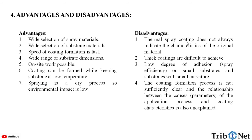In case of disadvantages, thermal spray coating does not always indicate the characteristics of the original material. Thick coatings are difficult to achieve. There is a low degree of adhesion, that is spray efficiency on small substrates and substrates with small curvature. The coating formation process is not sufficiently clear and the relationship between the causes, parameters of the application process and coating characteristics is also unexplained.